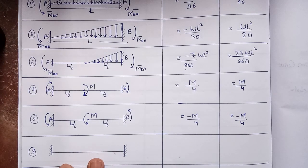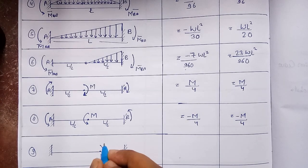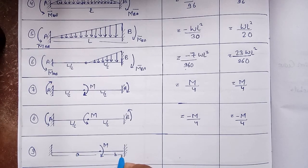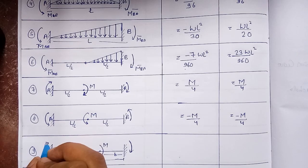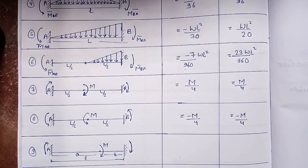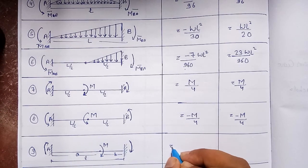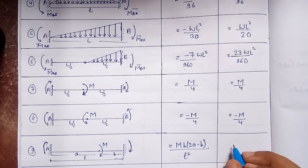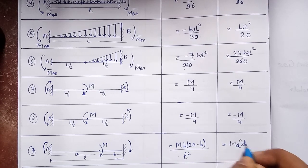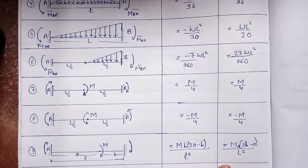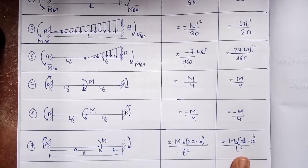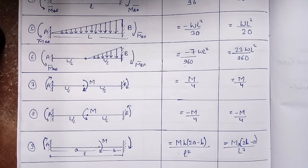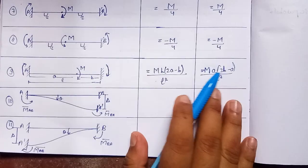The ninth case is when a moment M is applied at an arbitrary position along the beam — at distance 'a' from A and distance 'b' from B, with total span L. The moments at both ends are clockwise. The fixed end moment at joint A is M-bar_AB = M·b(2a − b)/L² and at joint B is M-bar_BA = M·a(2b − a)/L². This applies when the moment is not at the center.